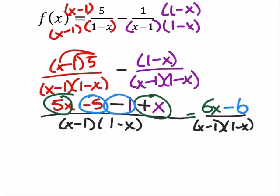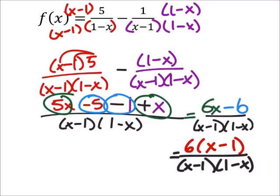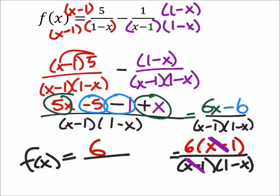Now, in that numerator, I can see that I can factor out a 6 from both of those terms. So, I'm going to factor out a 6, which leaves me with x minus 1. And the denominator is the same. And hopefully, we see that this x minus 1 cancels out this x minus 1. Leaving us with f of x equals the 6 in the numerator and then a 1 minus x in the denominator.